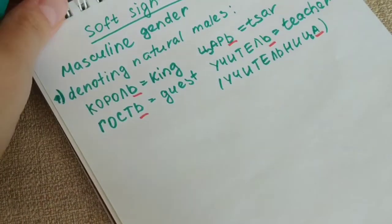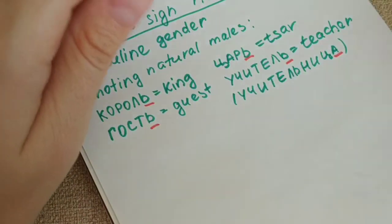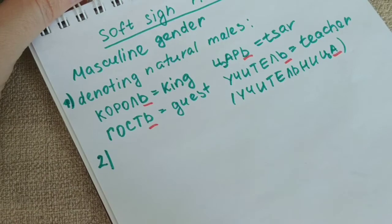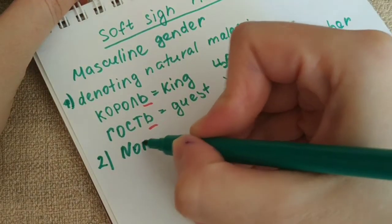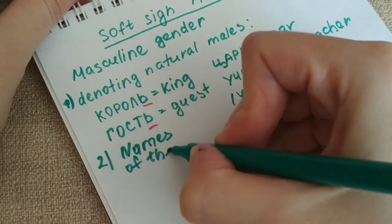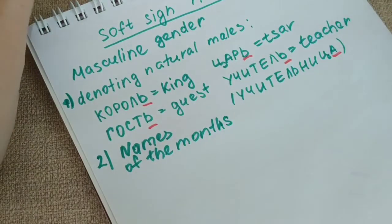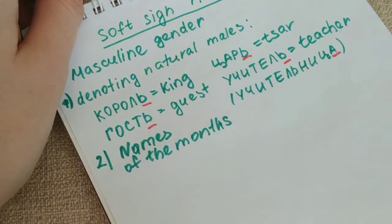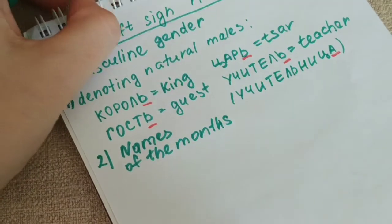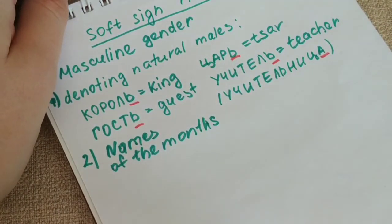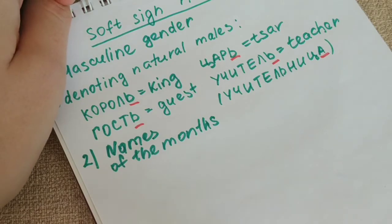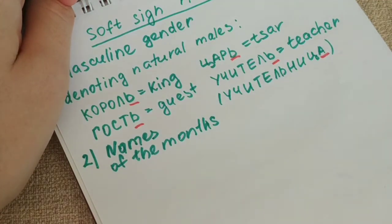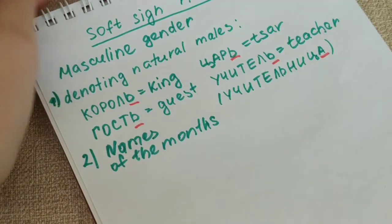Then let's look at the second subgroup of masculine gender nouns ending in the soft sign. These are the names of the months. All of the names of the months in the Russian language are of the masculine gender. There are some names of the months that are ending in the soft sign, and they are of the masculine gender. Let me give you several examples.